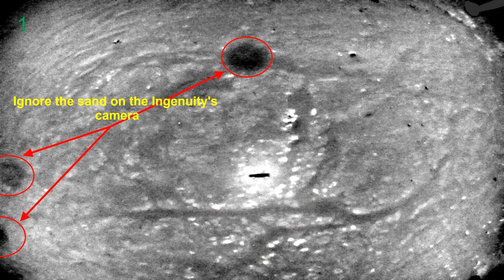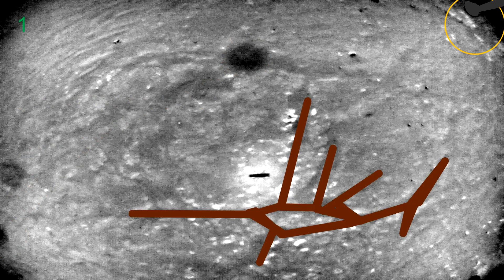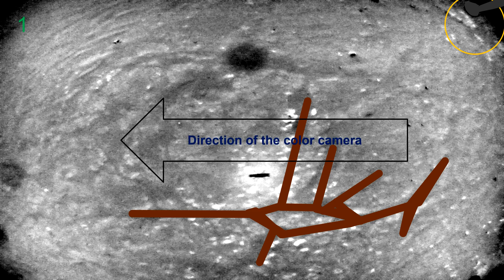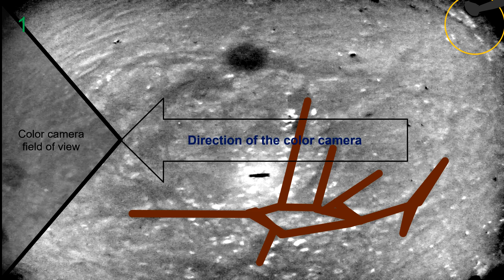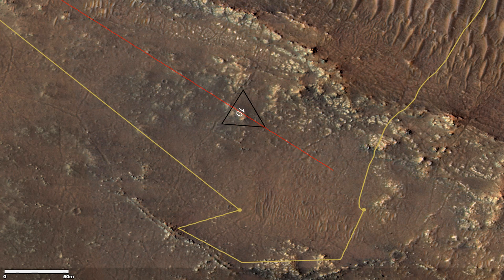The black and white images always have this lag in the upper right of the frame, and the color camera is facing opposite to the lag. That's how Ingenuity is constructed.